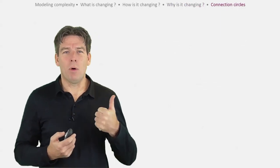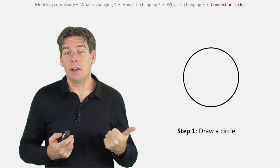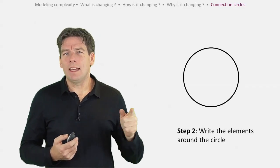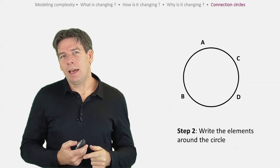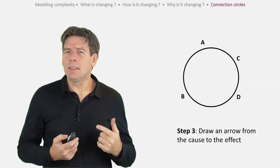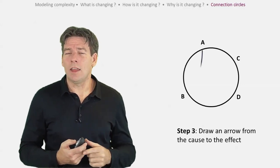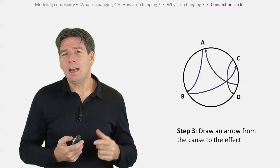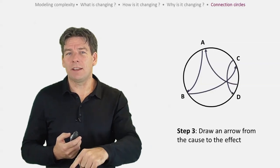Okay, step one: we begin by drawing a circle. Step two: write the elements around the circle. Step three: find elements that directly cause another element to increase or decrease and draw an arrow from the cause to the effect.